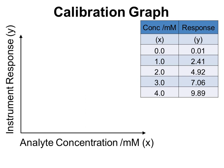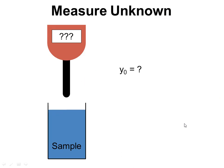What we have is the instrument response on the y-axis, and the analyte concentration on the x-axis. We can plot all of those points that we've measured onto the graph, and then we can put a line of best fit through those. We've got the basic form for a straight line, y equals mx plus c. And we can now use this to go on to look at our unknown sample.